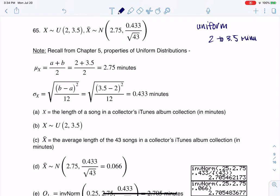So I can recognize that my variable in this case is continuous numerical because it's basically time and the units are minutes. And because it told me the distribution was uniform, I know that I can write X ~ U(2, 3.5).